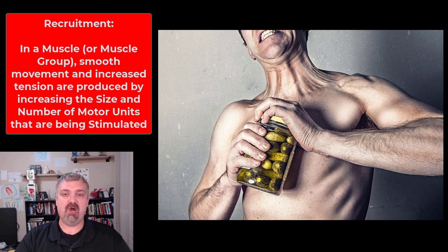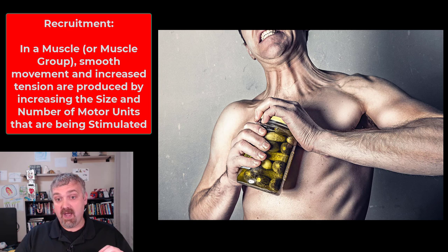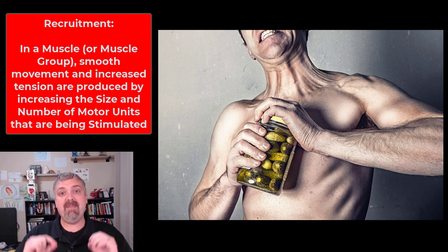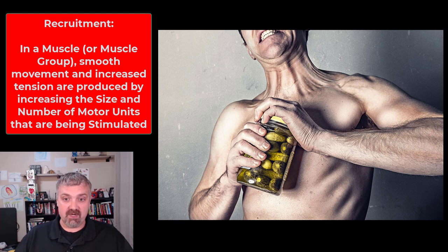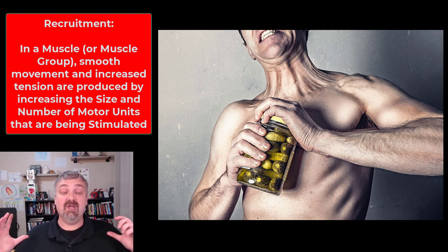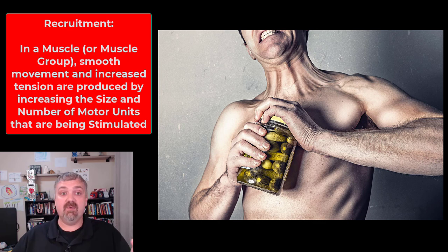You see the guy here trying to open this pickle jar. If muscle fibers can only be fully contracted or not, then if I need to generate more force, I do that by calling in more muscle fibers. I can't make a muscle fiber do more work — I need more muscle fibers to do the work. So if I'm trying to open this jar and I can't get it to open, recruitment is going to call in more motor units to stimulate more muscle fibers, or larger motor units. That's how you generate more force, whether it's lifting a heavier weight or whatever you're doing.